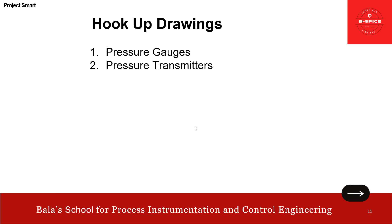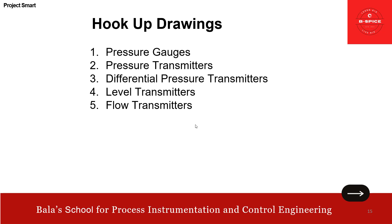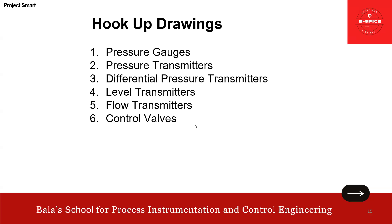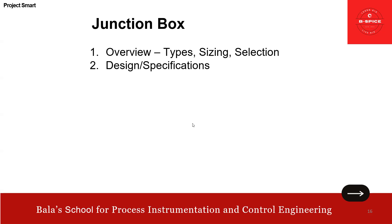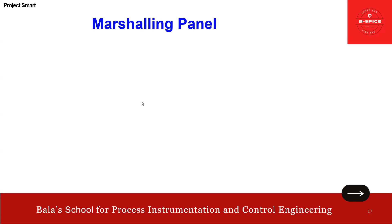Then hookup drawing for pressure gauge, pressure transmitter, differential pressure, level transmitter, flow transmitter, and control valves — all coming very soon. Then junction box — type, sizing and selection, how to write the design specification, and how to develop the GA (general arrangement) and IA (internal arrangement), plus bill of material.